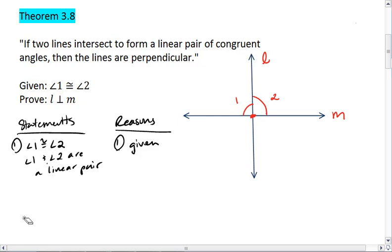So then, we know that the measure of angle 1 plus the measure of angle 2 equals 180 degrees. That's the definition of a linear pair, or the linear pair postulate.